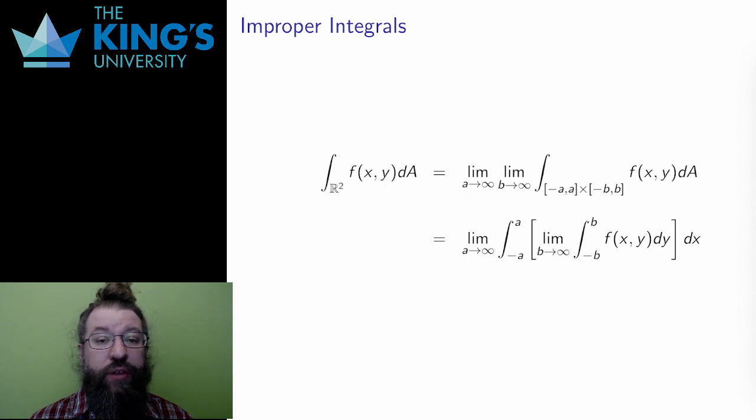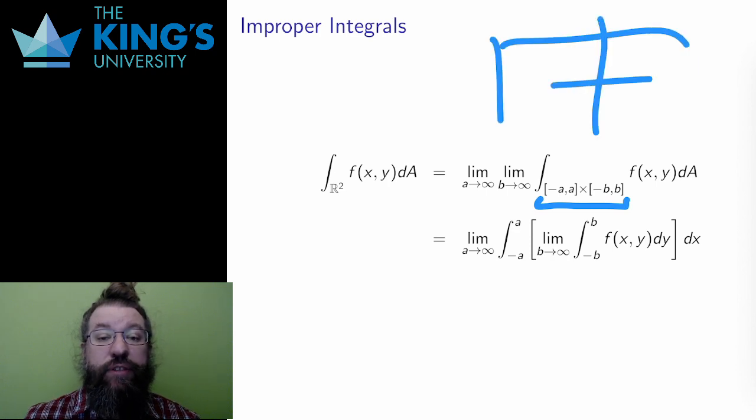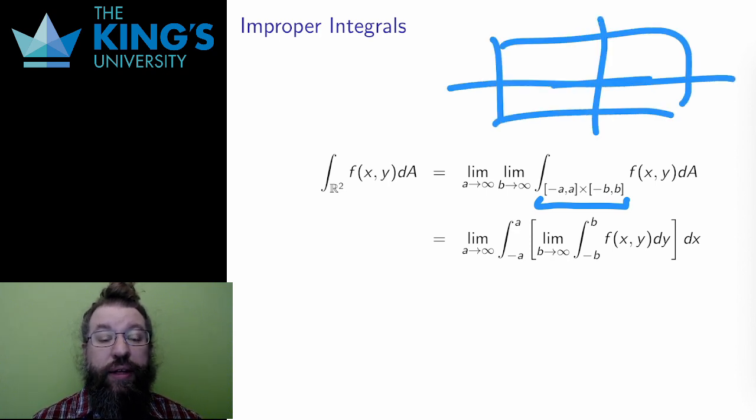This also requires a limit. There are a variety of ways to set this limit up, and one of them is to take the interval from negative A to A, cross negative B to B, which is a rectangle centered at the origin. Then I can take the limit in both variables as the edges of this rectangle go to infinity. In the limit, this extends the domain of the integral to the entire plane.